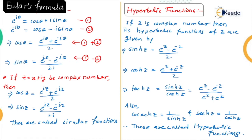If z is a complex number, z = x + iy where x is the real part and y is the imaginary part, then replacing θ by z gives: cos z = (e^(iz) + e^(−iz)) / 2 and sin z = (e^(−iz) − e^(iz)) / 2i. These are called circular functions.